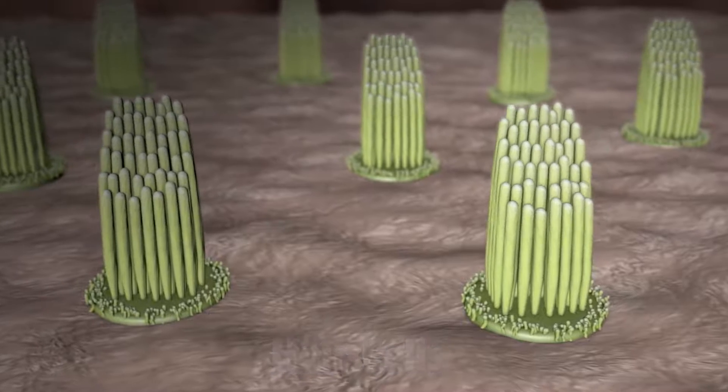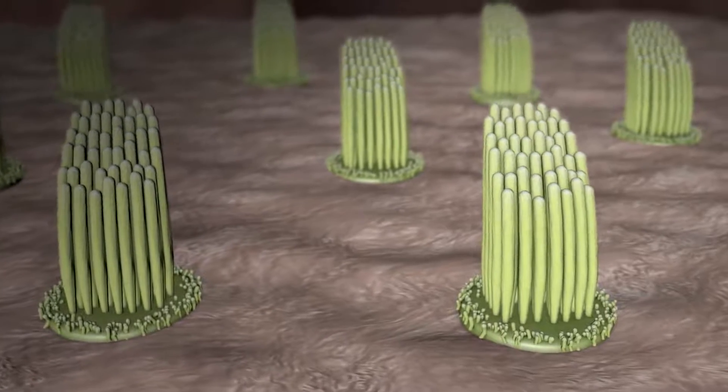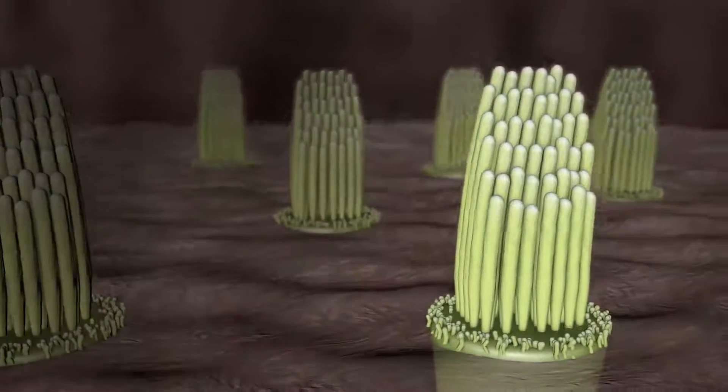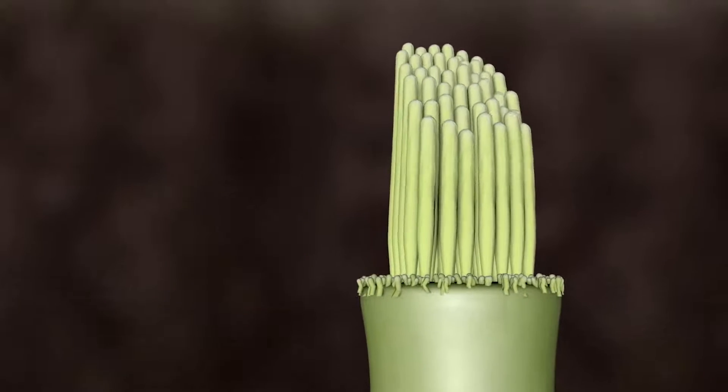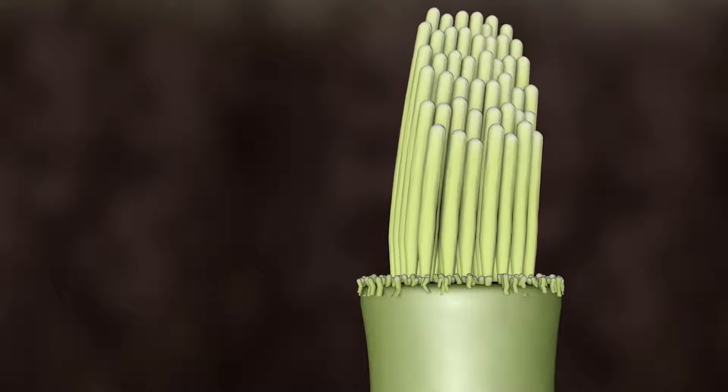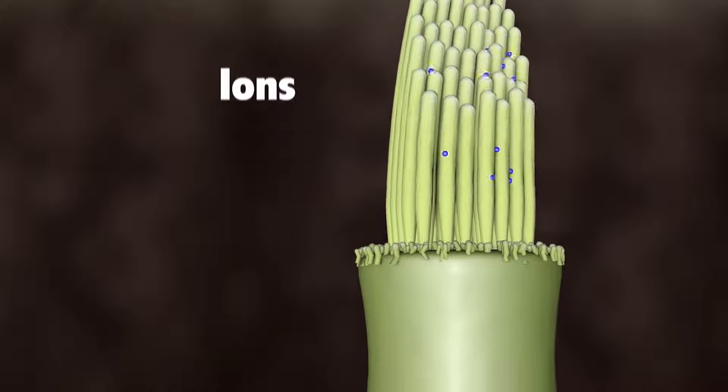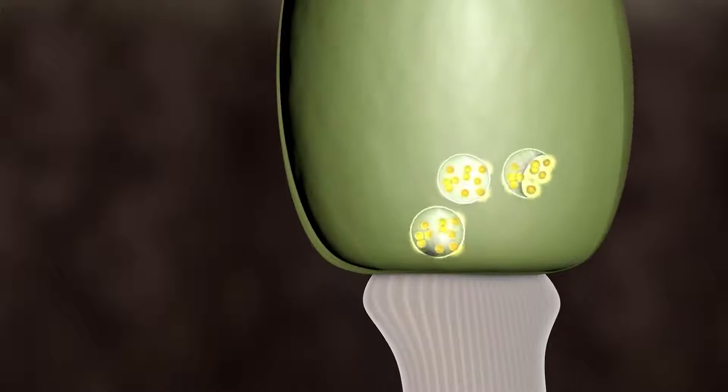The hair cells inside the cochlea ride these waves, and the hair bundles are moved. The hair bundle on top of the hair cell turns these movements into electrical signals. As the hair bundles are moved, ions rush into the top of the hair cells, causing the release of chemicals at the bottom of the hair cells.